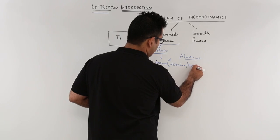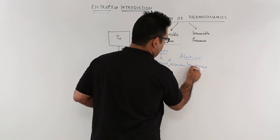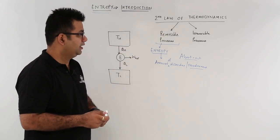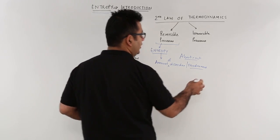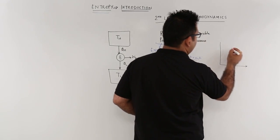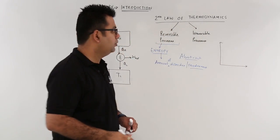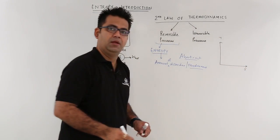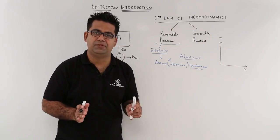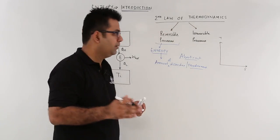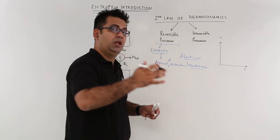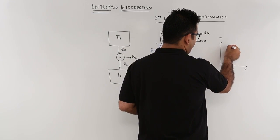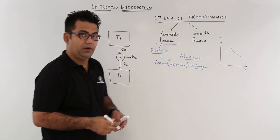Entropy represents disorder or randomness. If you look at a plot where the x-axis is entropy and the y-axis is temperature — setting aside isentropic processes where entropy remains the same — let's talk about compression and expansion which are not isentropic. Consider a certain process going like this on that plot.